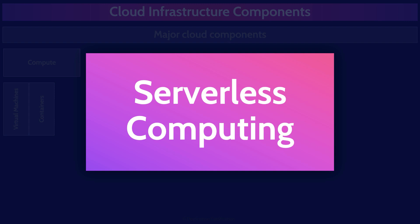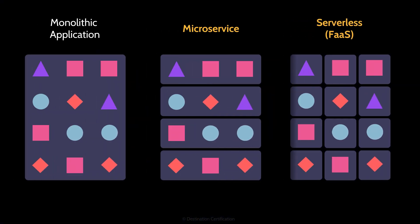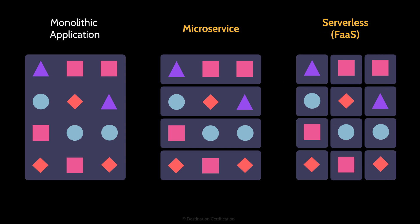The final type of virtualized compute we'll talk about is serverless. Serverless encompasses a whole bunch of services that allow you to run applications in the cloud without having to manage any infrastructure. A subset of serverless is called functions as a service. Before we talk about functions as a service, it's helpful to understand a fundamental concept: we can separate an application into a bunch of interconnected functions. A more historical way of developing an application is to create a monolithic application, where all the functions are packaged together into a large executable.